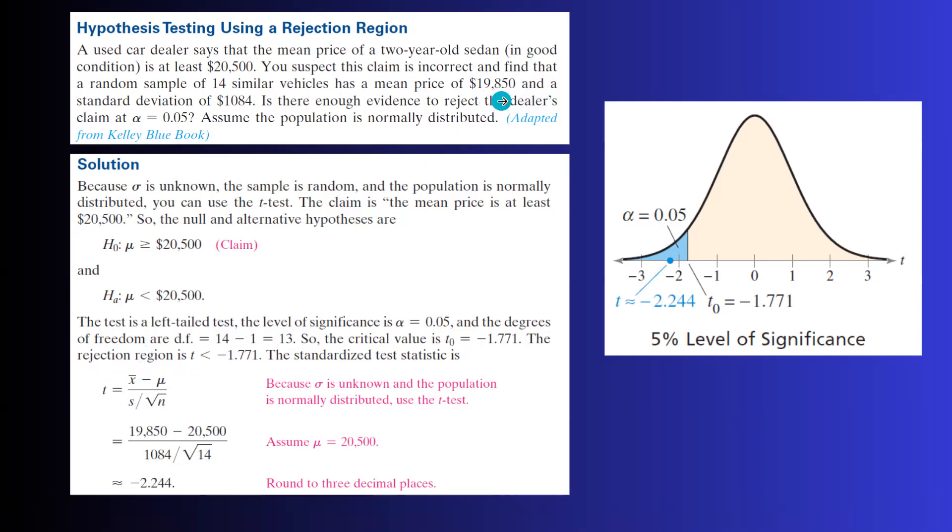And mu is the proposed population mean, which is $20,500. s is the sample standard deviation divided by square root of n, which is 14. After doing this calculation, you get negative 2.244, which is basically less than the critical value. So it lands in the rejection region.